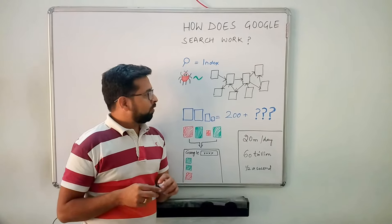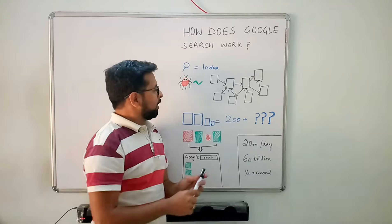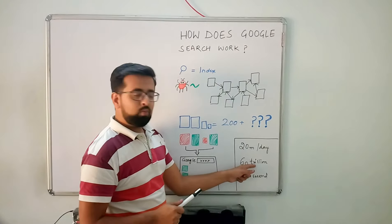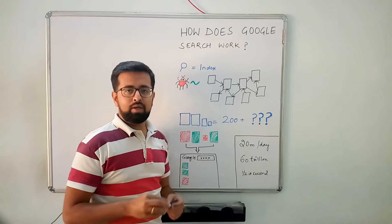What this crawler does is it goes out and collects information from 60 trillion web pages that are currently live on the internet.